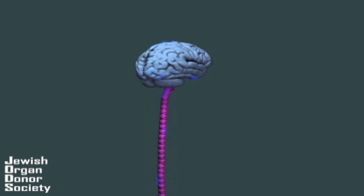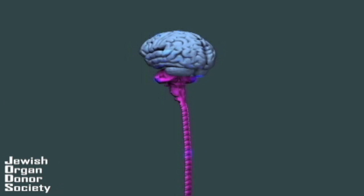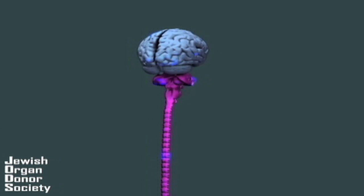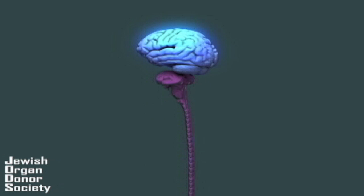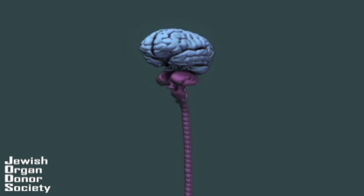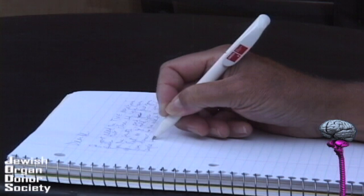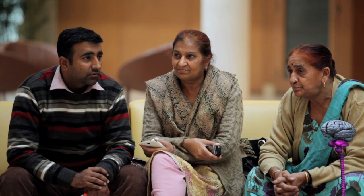Let us start by understanding anatomy. The brain consists of two parts: the cortex and the brainstem. The cortex is the larger part of the brain and the brainstem is the smaller. The brainstem is actually the top of the spinal cord. The cortex controls higher functioning activities such as reading, writing and talking.